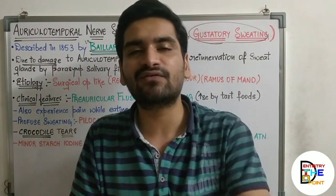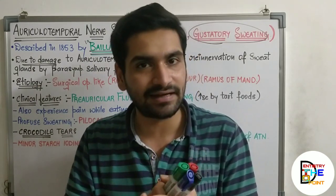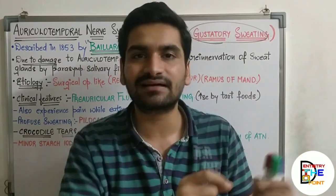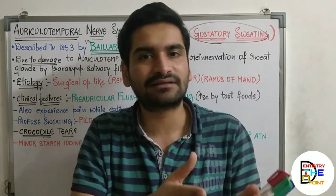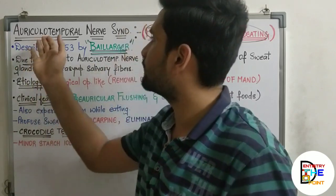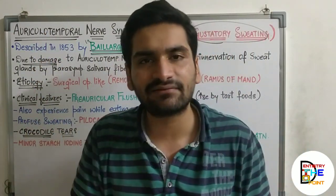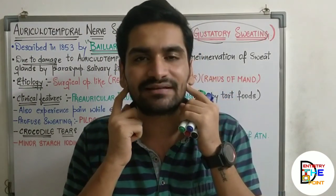When surgery is complete and the recovery phase begins, the auriculotemporal nerve — which is mainly sensory in function — also supplies the parotid gland through its parasympathetic fibers, which result in the secretion of saliva. During recovery, these parasympathetic fibers regenerate and re-innervate the parotid gland, but they also mistakenly innervate the sweat glands of the pre-auricular region.